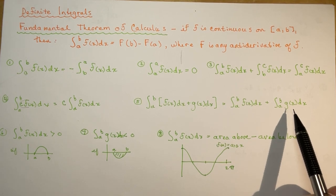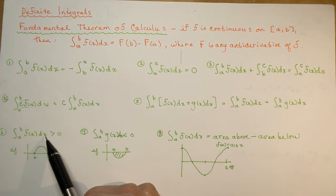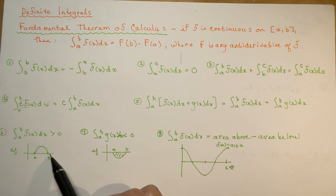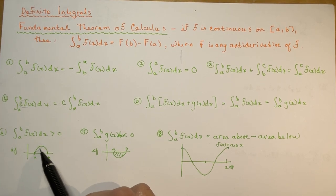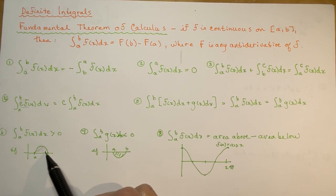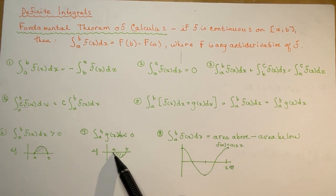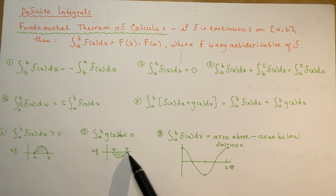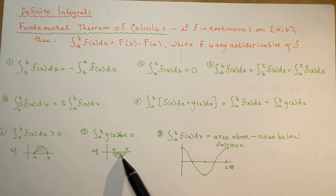Now, if my function is above the x-axis, then the area is going to be greater than 0. But if my function is underneath the x-axis, then the area is going to be negative.